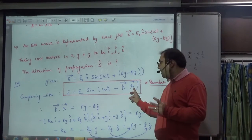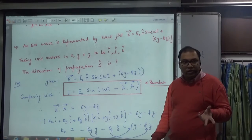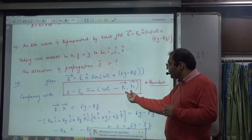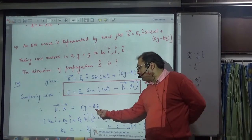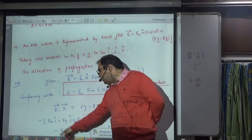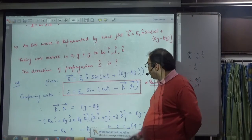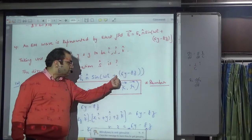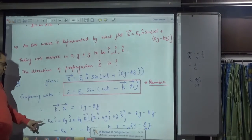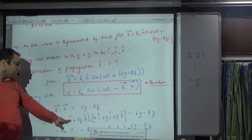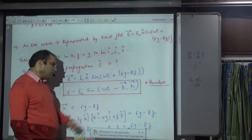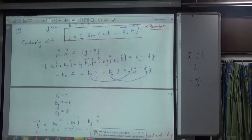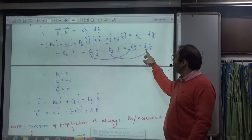We have y and z, so we put r-vector and compare k-vector dot r-vector with the given expression 6y − 8z. You have to compare: k-vector dot r-vector equals (kx·i + ky·j + kz·k) dot (x·i + y·j + z·k). When you expand this dot product, you get 6y − 8z, so matching coefficients: minus with minus, this is plus and this is minus.